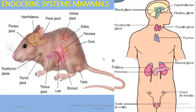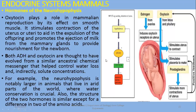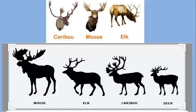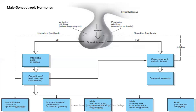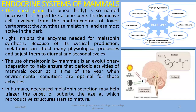We are discussing the endocrine system of mammals. In the previous lectures we discussed the pituitary gland, its parts — neurohypophysis and adenohypophysis — and their hormones. Today we are going to start our lecture from the pineal gland, or pineal body.